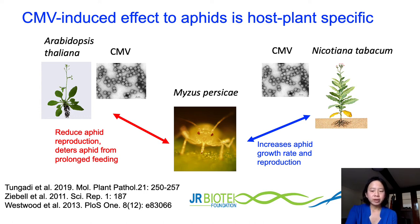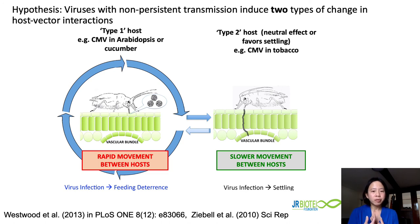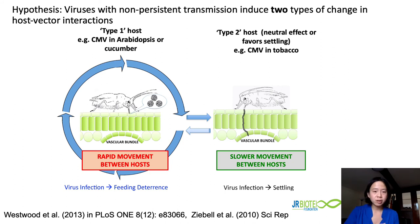In contrast, on tobacco, CMV infection makes the plant a better host for aphids — they grow better and reproduce more. The hypothesis is that both scenarios are beneficial to the virus. In Arabidopsis, making the plant a less favorable host promotes rapid movement of aphids from one plant to another, which is good for the virus as it means faster transmission. On tobacco, CMV infection causing aphids to reproduce better allows population build-up on the plant, which is beneficial when environmental conditions are unfavorable, eventually leading to further spread — so both scenarios remain beneficial to the virus.